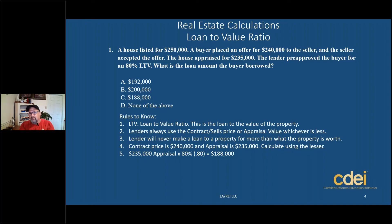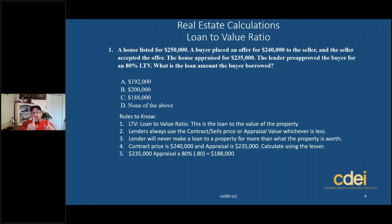We have an 80% LTV assigned from the bank and an appraised value of $235,000 — a simple multiplication. You convert the percent to a decimal, so $235,000 times 80% equals $188,000, which will be the loan amount the lender will lend. Again, it's predicated on the lesser of the contract or sales price versus the appraised value, whichever is less.